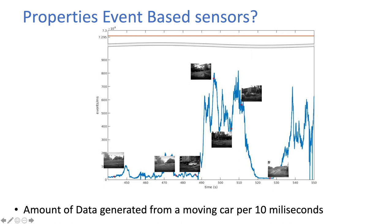This is an event-based sensor put on a car — a very old result. You see the number of events generated is between 100 to 700 per 10 milliseconds, which is extremely low for a QVGA sensor. If you create a frame, you're going to lose a lot of the advantages of these cameras because you will have to allocate fixed memory. The amount of data you'd need to store a frame at this pace is shown in red, while you actually have only a few tens of events coming — putting them into an empty frame is just not worth it.